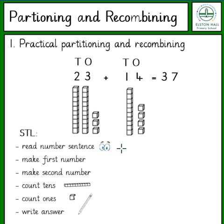Counting the tens and ones together: 10, 20, 30, then counting on the ones: 31, 32, 33, 34, 35, 36, 37.